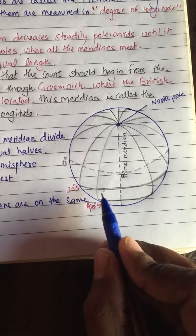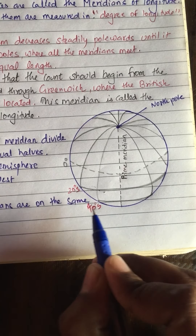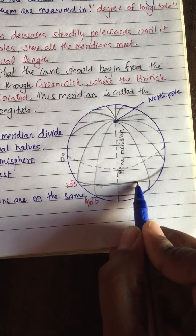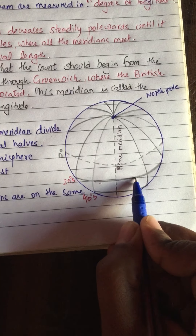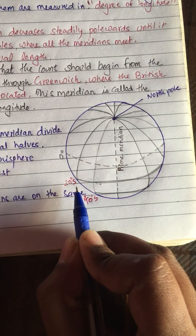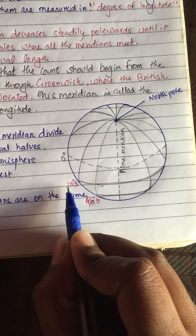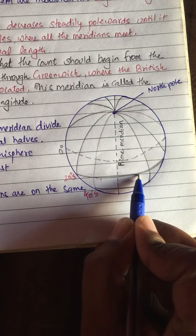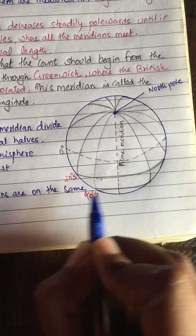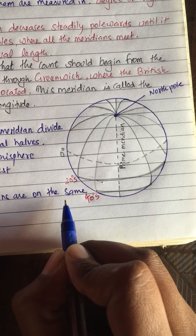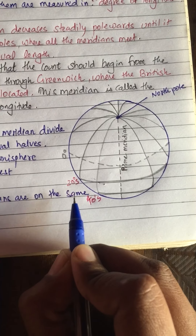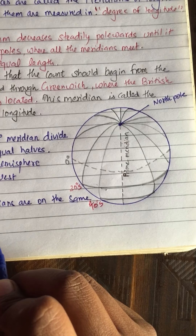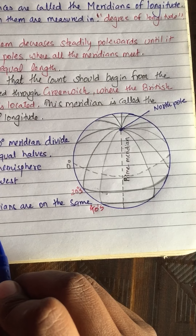Let us suppose this is 20 degrees south and 40 degrees south. If two persons are standing here and one is standing here, and we want to find out the location, we see that 20 degrees south latitude applies to this point and also to that point. So if a person is here or there, the problem is that the latitude is the same. How will we distinguish that the person is here or there? To solve this problem, something is required — that is longitude.